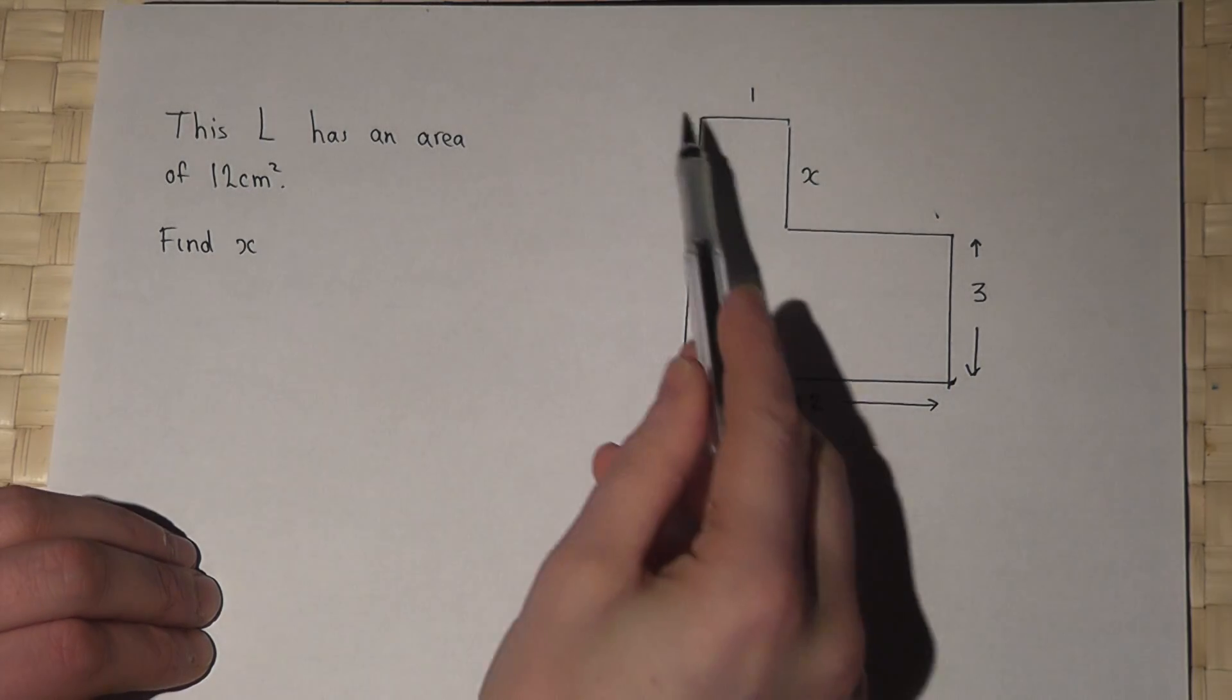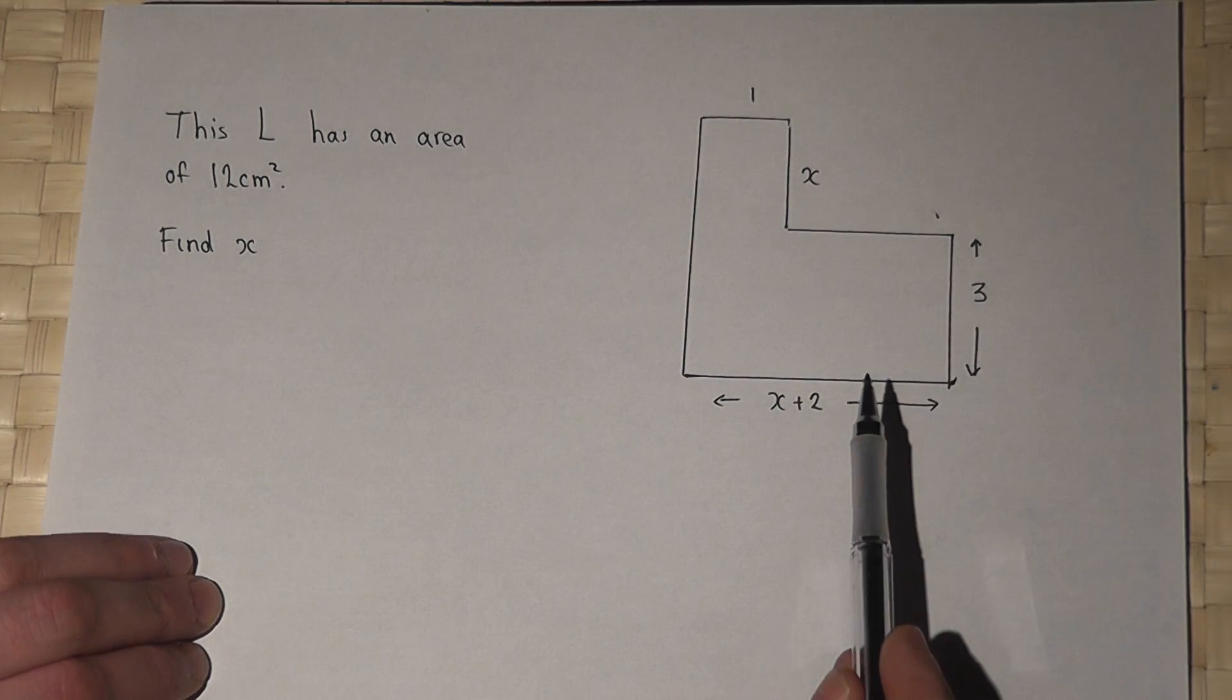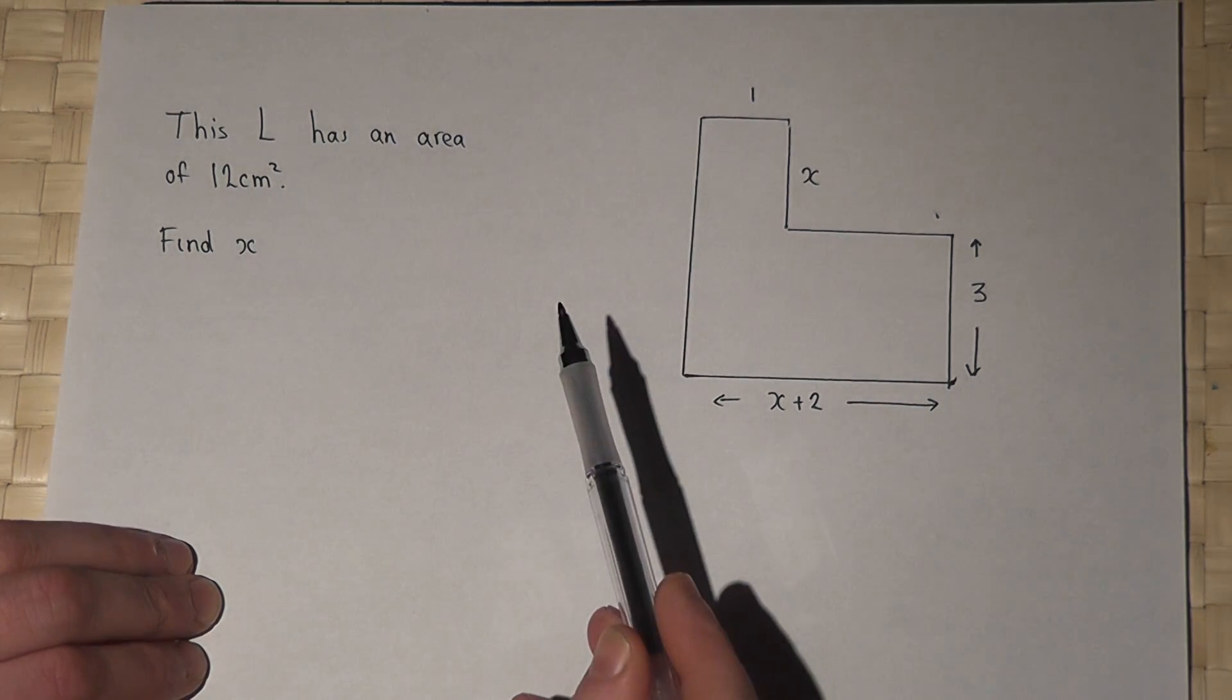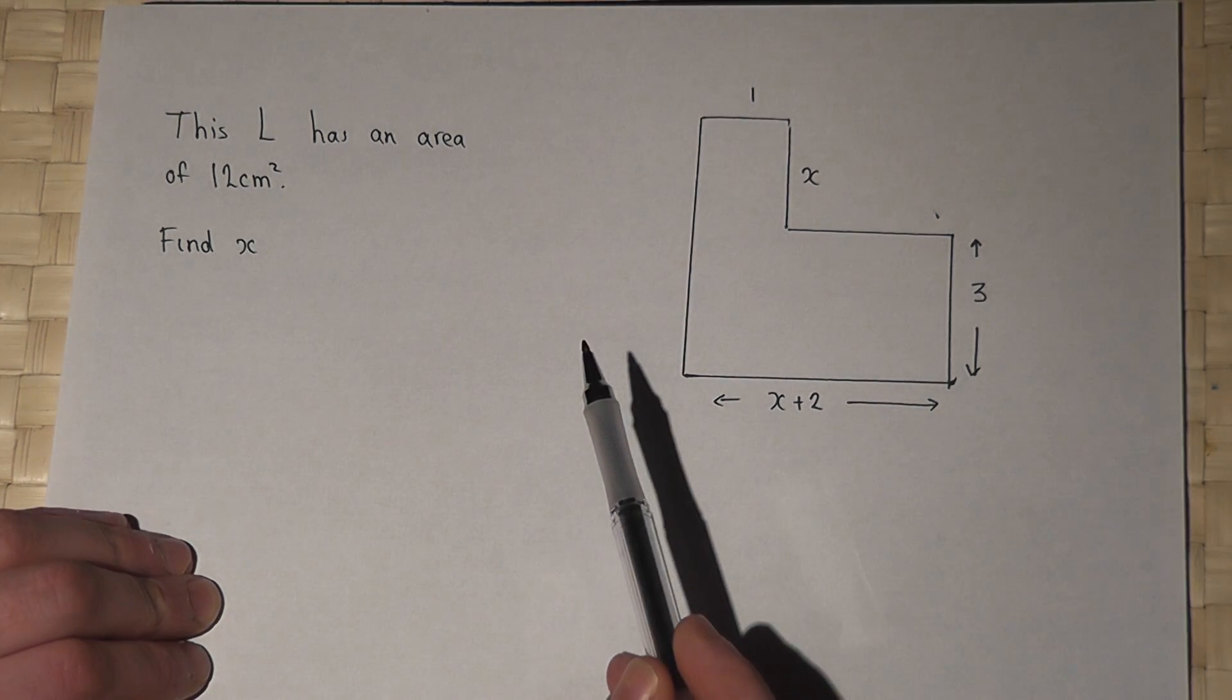In this question we're given an L shape which has got an area of 12 centimeters squared, and we're asked to find x.